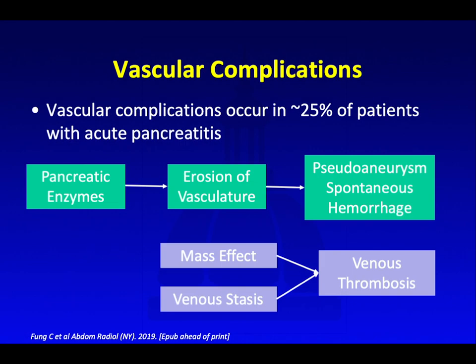Vascular complications occur in 25% of patients with acute pancreatitis. The pancreatic enzymes are very erosive, so they can erode into the adjacent vasculature and cause pseudoaneurysms and spontaneous hemorrhage. Due to mass effect from inflammatory changes and fluid collections, as well as venous stasis from inflammation, those can lead to venous thrombosis.